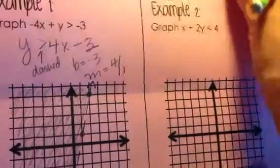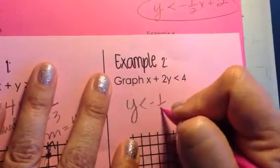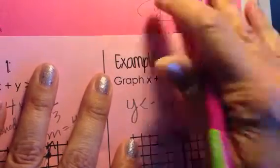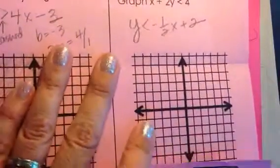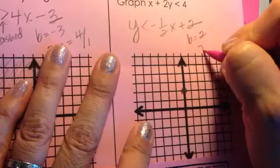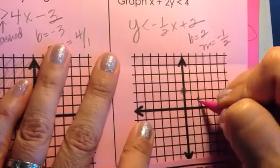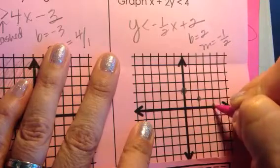All right. In example 2, when we solved example 2, we got y is less than negative 1 half x plus 2. And that was right off of our warm-up from Tuesday. I'm going to start by graphing with my b value of 2. And then, I'm going to use my slope of negative 1 half to drop down 1 and to the right 2. Down 1 to the right 2.